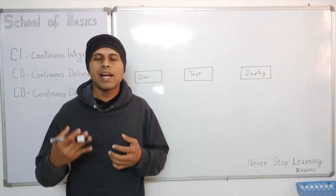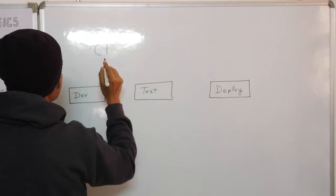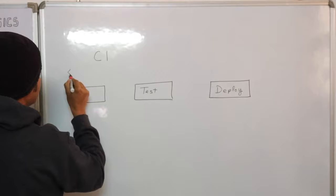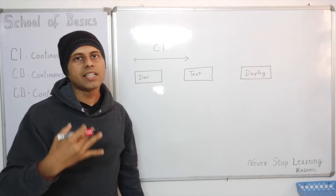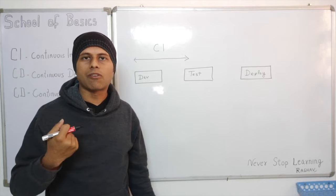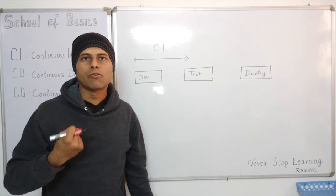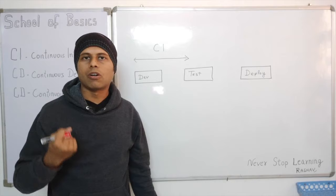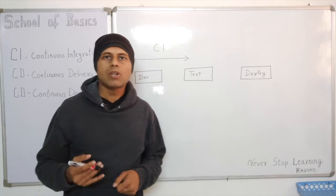The CI process expands from the dev phase until some part of the testing or QA phase, because most of the tests are unit tests which are automated at the dev end and run automatically after the build. We can also add some integration tests from the test environment to confirm that the code we have integrated today is all fine without any errors.